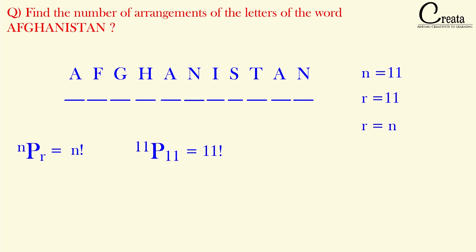If you observe, the letter A is repeating 3 times in Afghanistan, and the letter N is repeating 2 times. So what we have to do: we divide 11 factorial by 3 factorial because A is repeating 3 times, and we divide by 2 factorial because N is repeating 2 times. By solving, we get our answer.